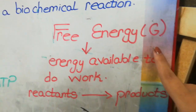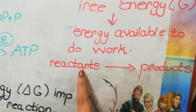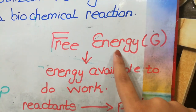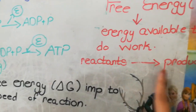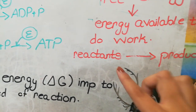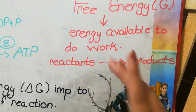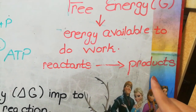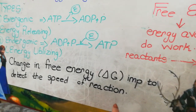Free energy is denoted by the letter G. It is basically the energy that is required for working — the energy required to convert reactants into products is known as free energy, indicated by the letter G. Change in free energy, denoted by delta G, indicates what changes are occurring in the reactant or product side, and it tells us in which direction the reaction proceeds. If the energy of the reactants is more and that of the product is less, the reaction will move in the forward direction. If the free energy is more on the product side and less on the reactant side, then it will work in the reverse direction.